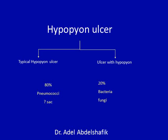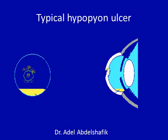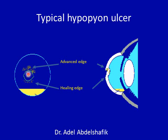The first example of infective ulcers is the hypopyon ulcer. A typical hypopyon ulcer is due to pneumococcal infection, representing 80% of cases. Other bacteria or fungi can also produce ulcers with hypopyon. In the typical hypopyon ulcer, the ulcer has an advancing edge and a healing edge, so over time the ulcer is moving, advancing in one direction and healing on the opposite side.